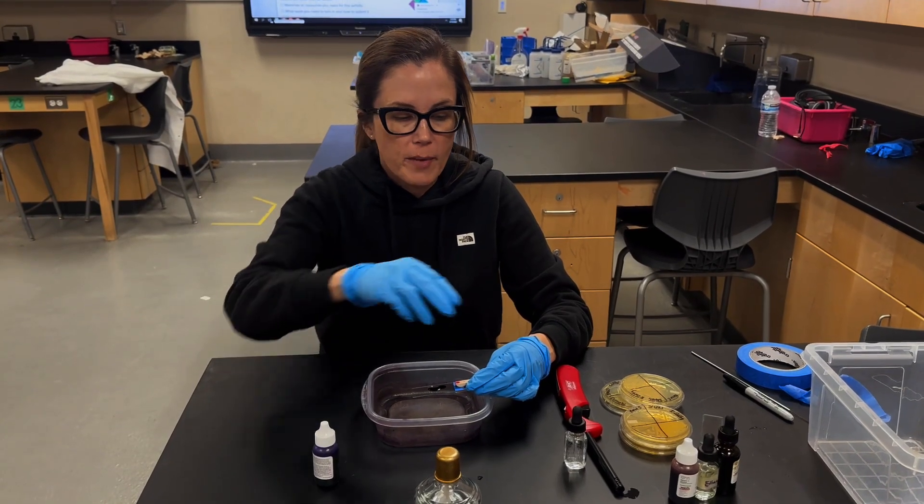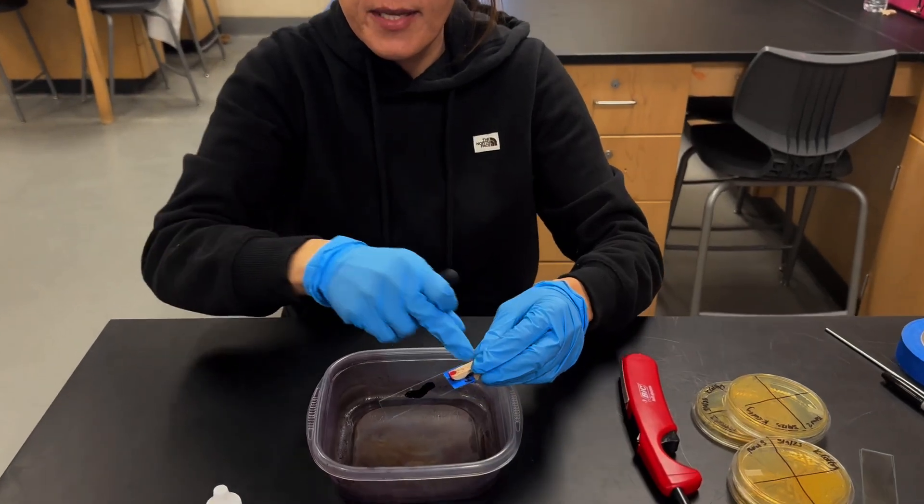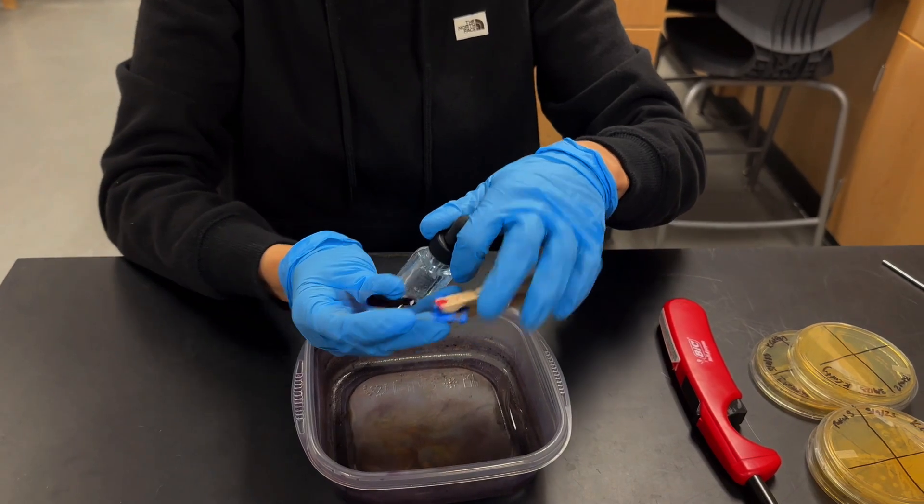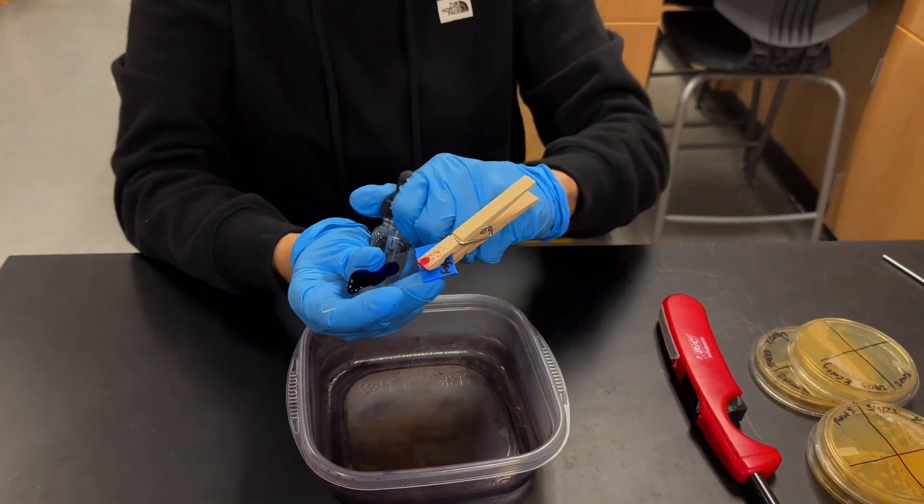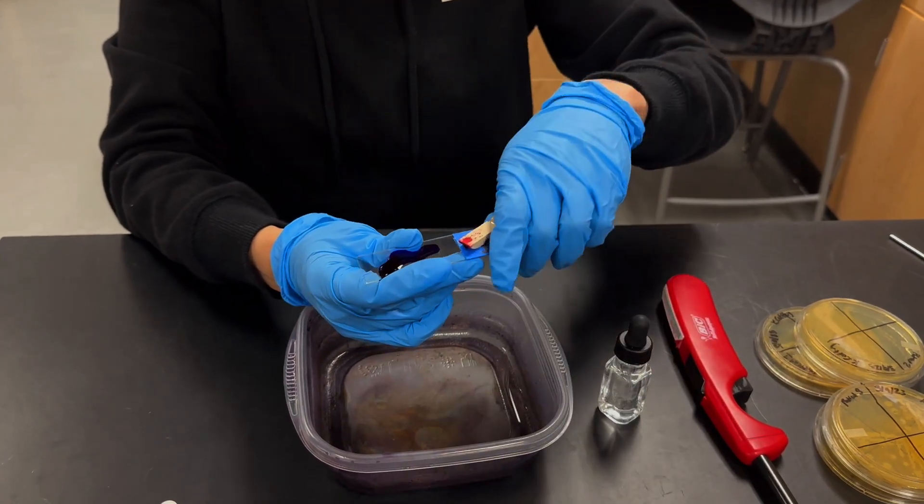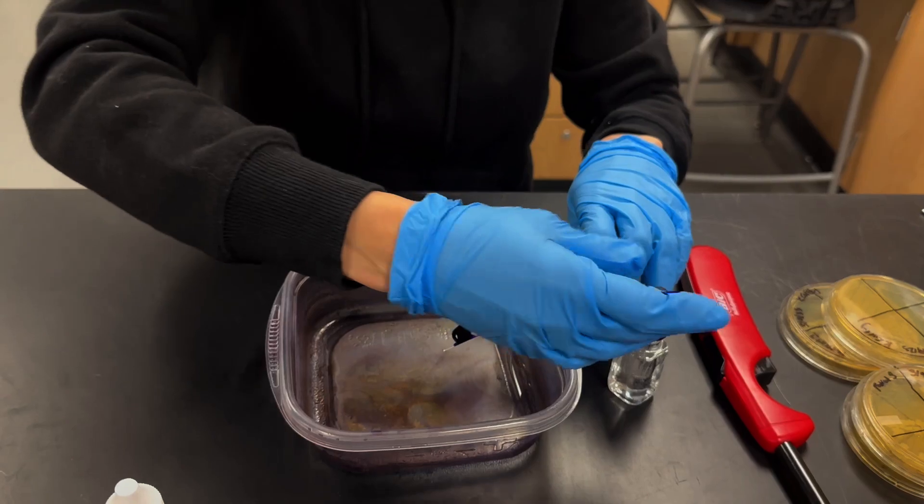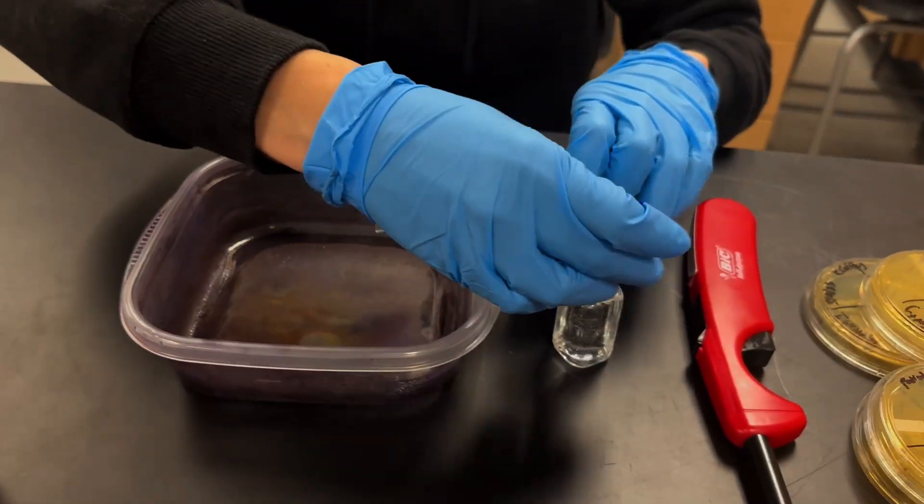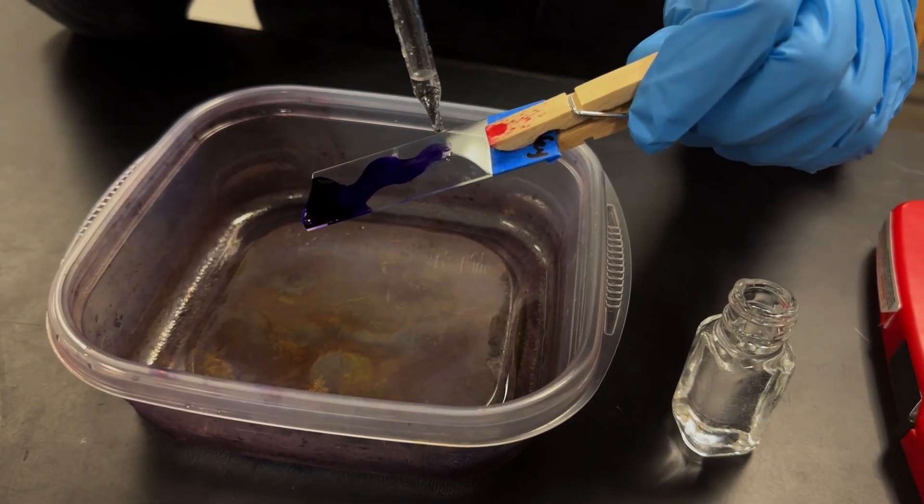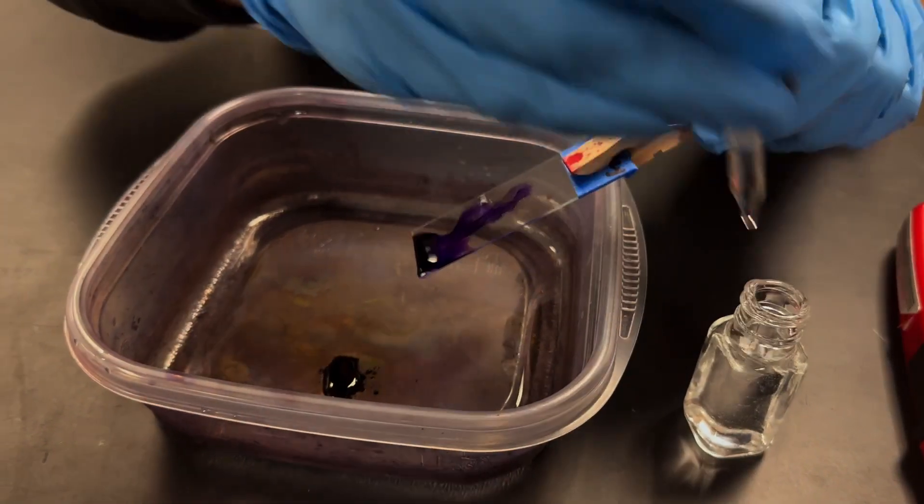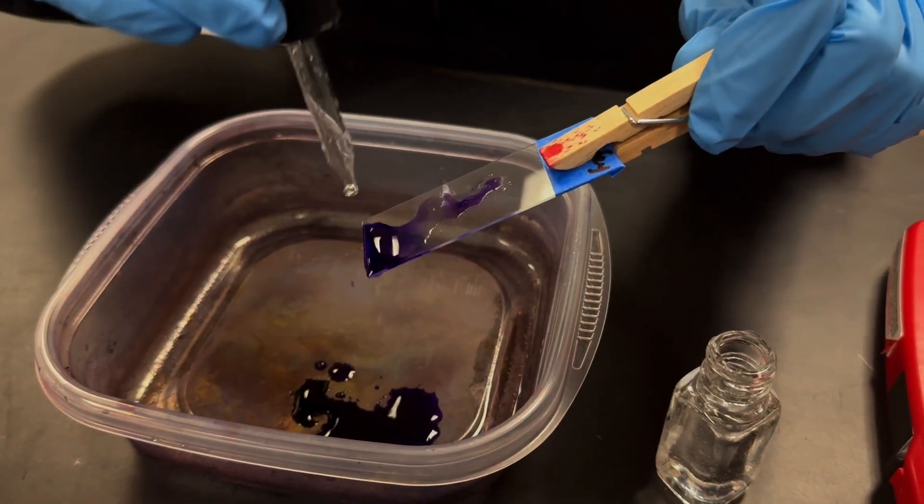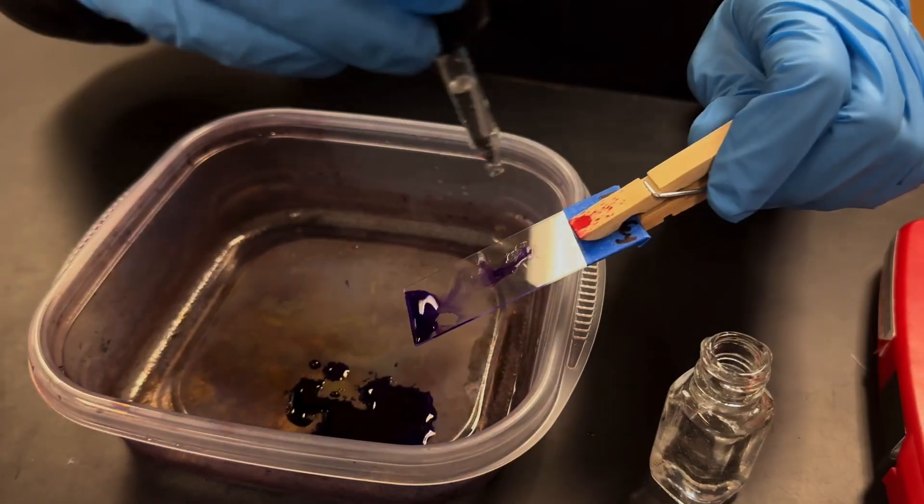So once the stain has been on for one minute, we're going to take the water and we'll be rinsing the stain off of the slide using the water. Remember the stain can stain your clothing. So you want to be careful as you're using it in class. It's probably helpful if you have a lab partner to help you with this part and you're just going to rinse it down like this. Remember a minute has passed. We're going to rinse it until most of the color has come off this slide.